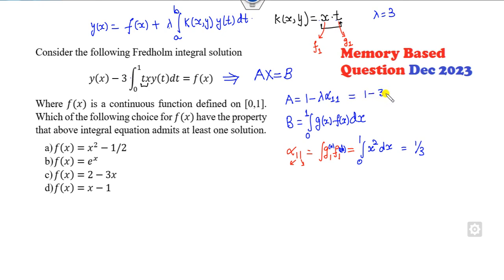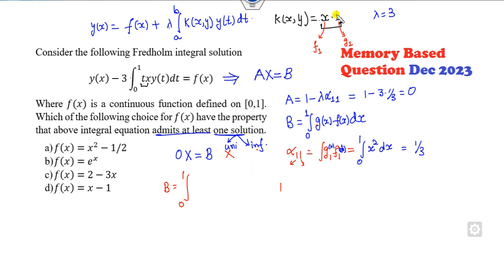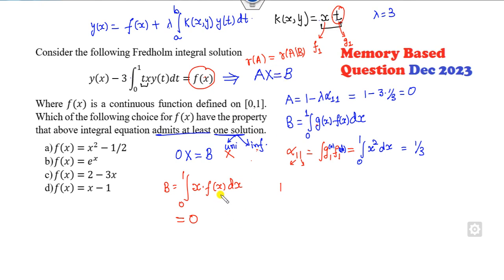So 1 minus 3 times 1/3 equals 0. This becomes 0·x = b. Now, this admits at least one solution — either a unique solution or infinitely many solutions. But a unique solution will not be possible, so only infinite solutions. When will there be infinitely many solutions? When b equals the integration of g(x)·f(x) equals 0, then the rank of A and rank of the augmented matrix [A|b] are the same, and it has infinitely many solutions.